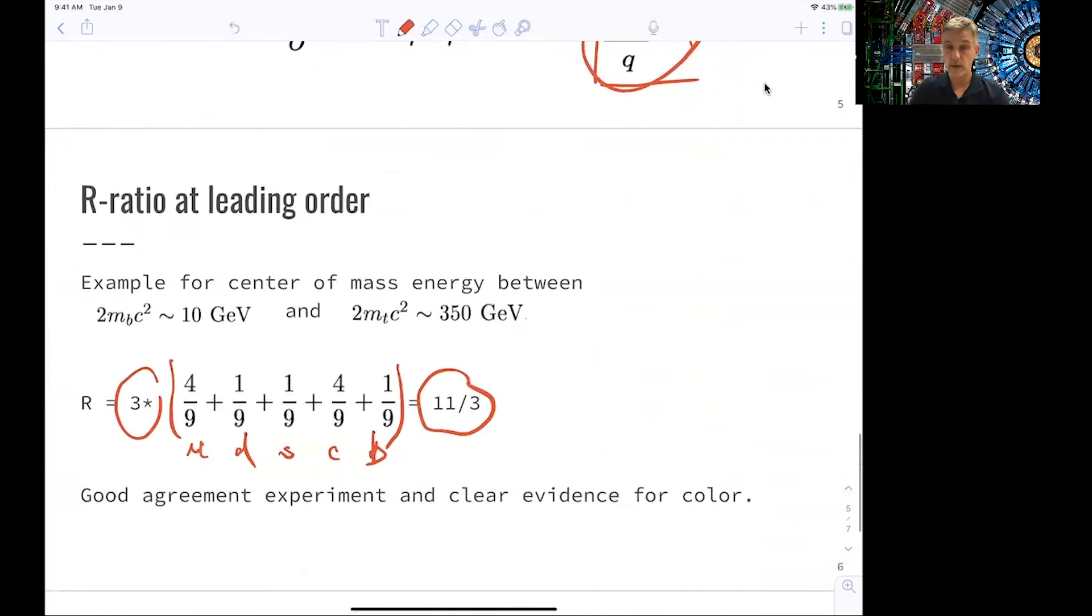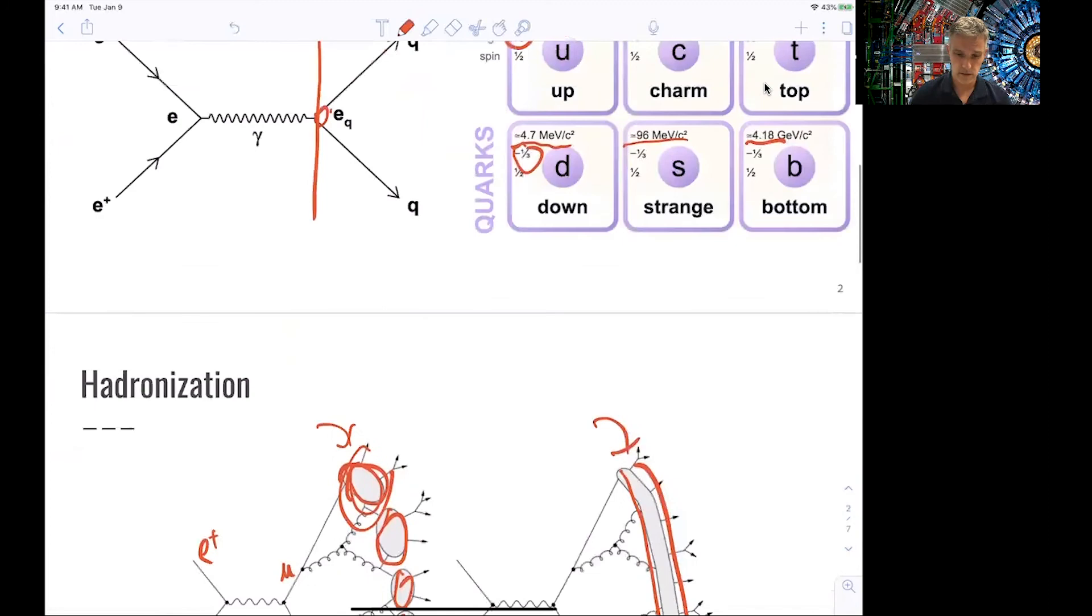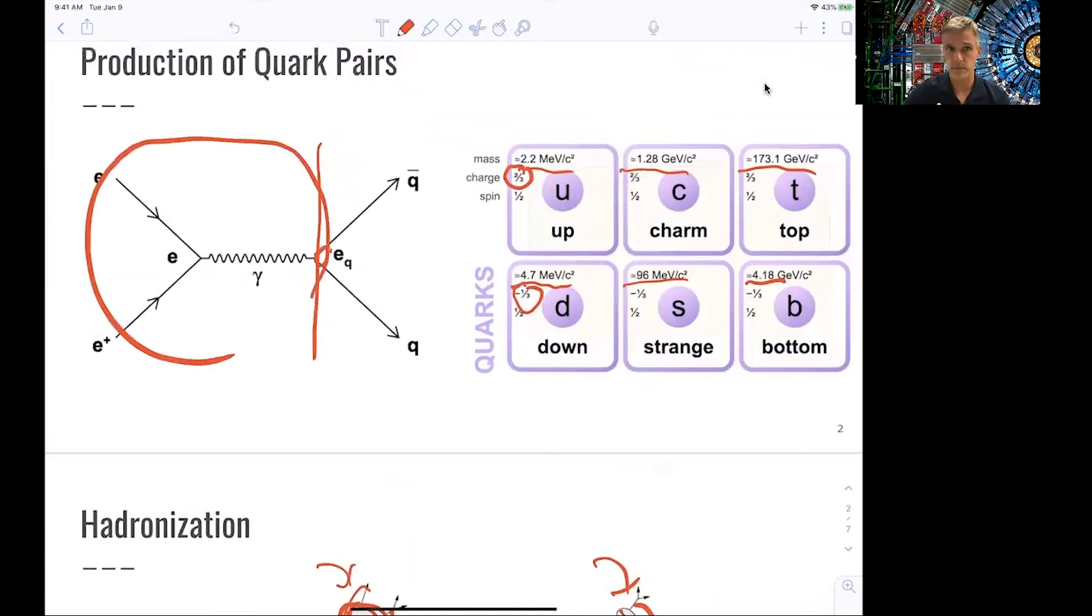Excellent. So this is clear indication, experimental indication, that this color factor here is a real thing. There seem to be three up quarks, three down quarks, three charm quarks, and so on. And we also see that this leading order effect here, the leading order calculation is already very precise. And the reason for this is that this process here is a QED process. The production cross-section is a QED process as we just discussed.